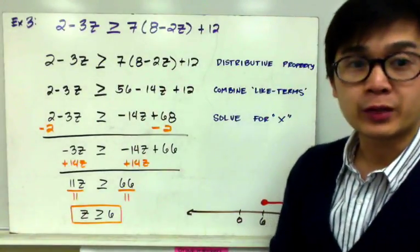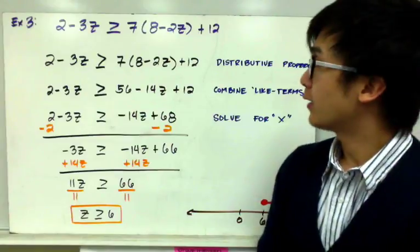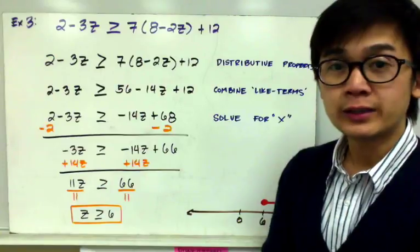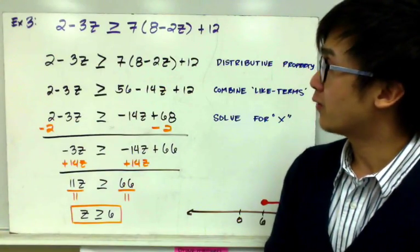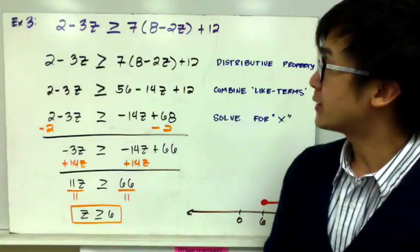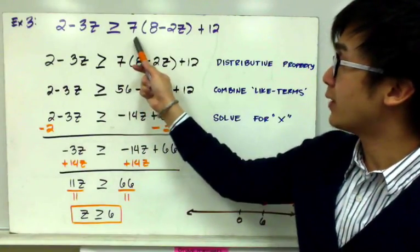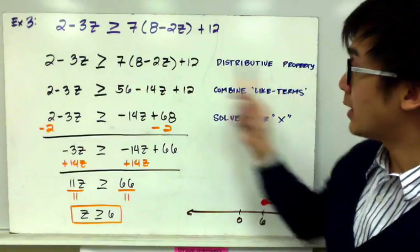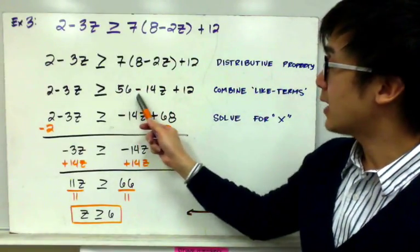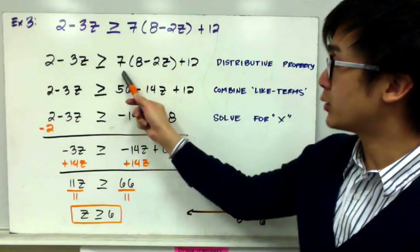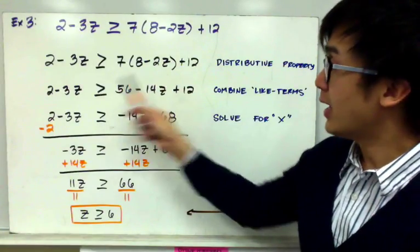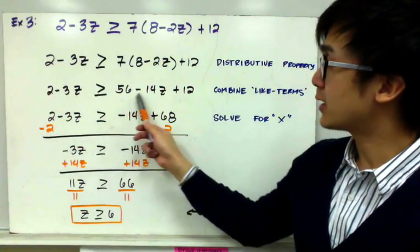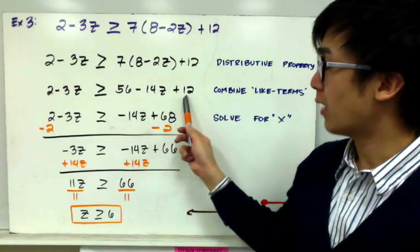For example number 3, we have 2 minus 3z greater than or equal to 7 times the quantity 8 minus 2z, plus 12. This requires a multi-step solution. The first step is to distribute 7 to 8 minus 2z using the distributive property, giving us 56 minus 14z. So we now have 2 minus 3z greater than or equal to 56 minus 14z plus 12.